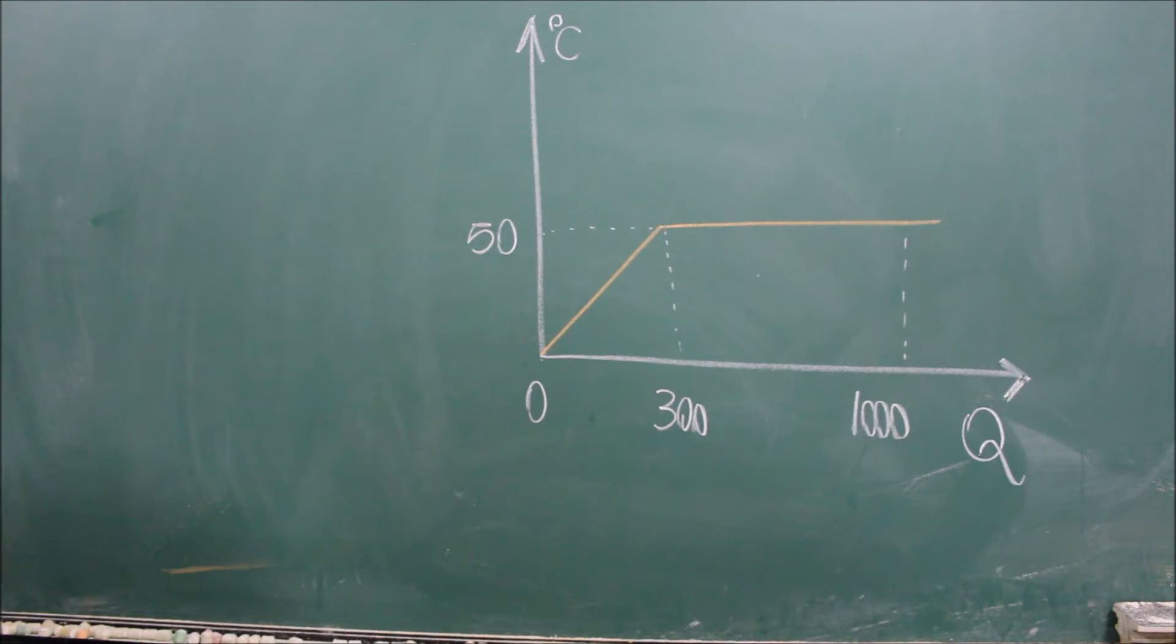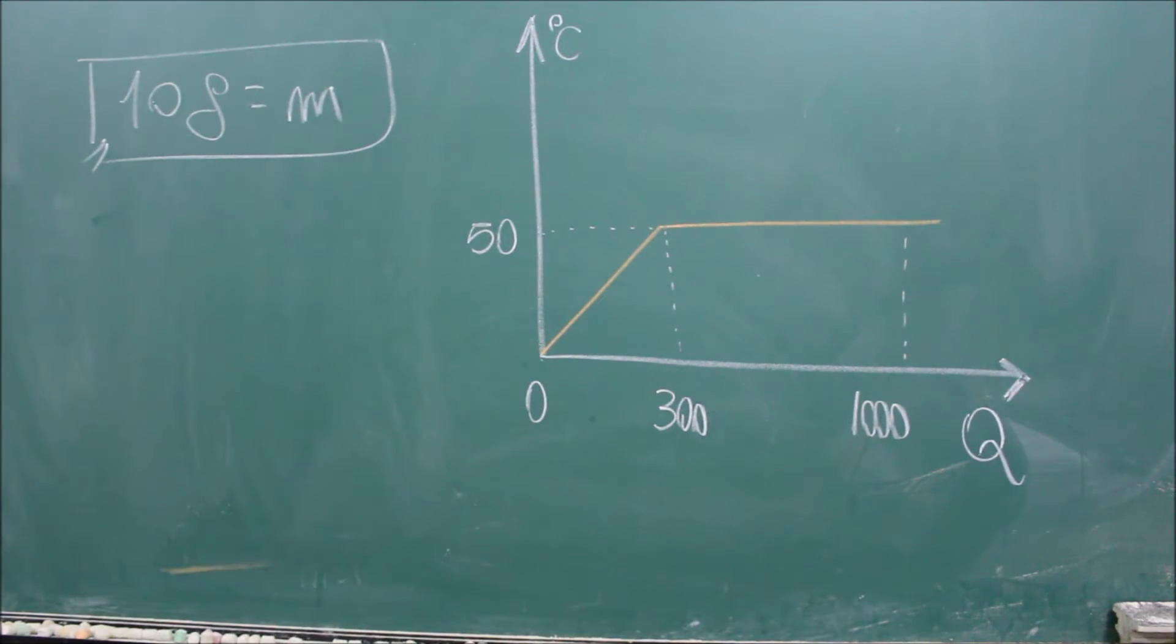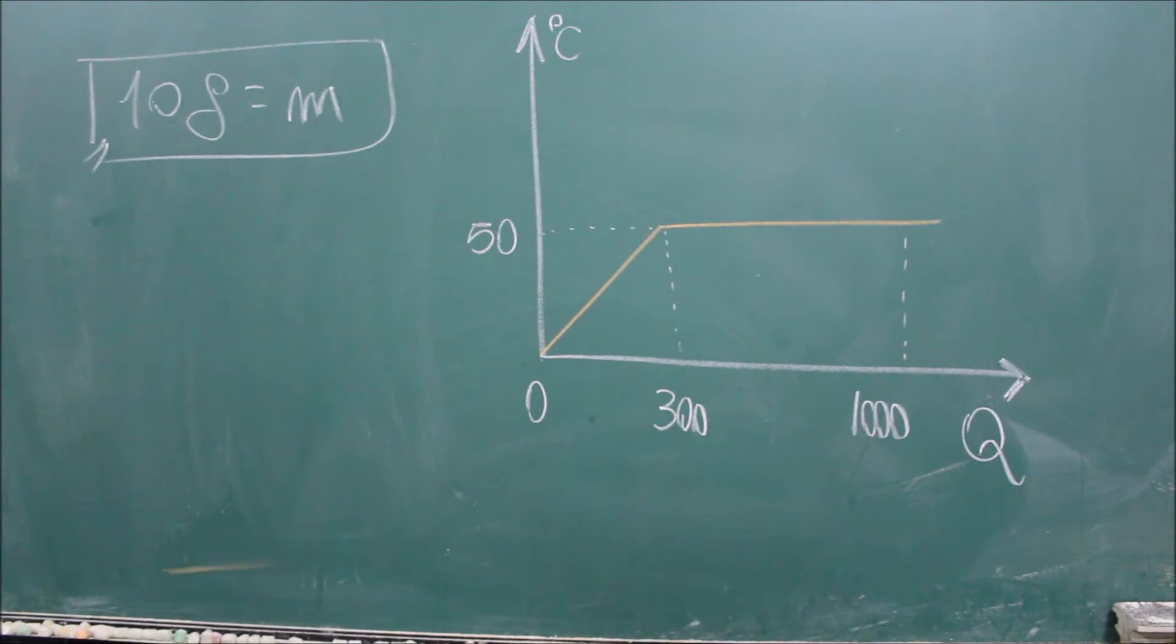Então é dito para você que temos uma substância aqui de 10 gramas de massa. Vou colocar G igual a 10, não é gravidade. Então 10 gramas de massa. E você está vendo aqui o gráfico de energia no eixo X e de temperatura no eixo Y. Energia dada em calorias e a temperatura dada em graus Celsius.